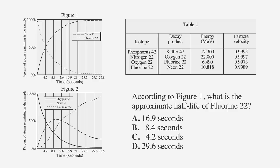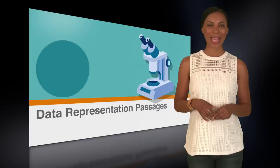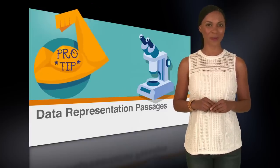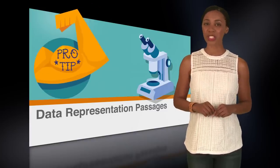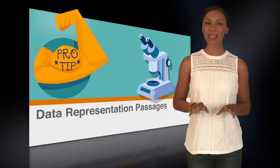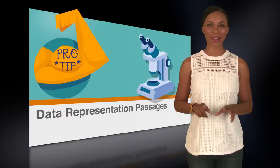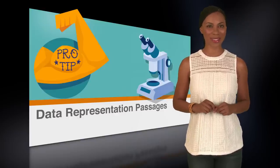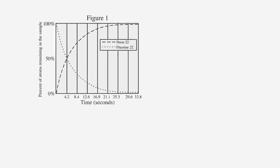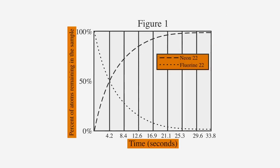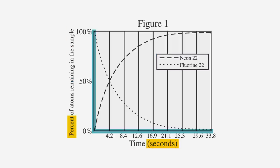For example, when the question directs you to Figure 1, don't go to Figure 2 or Table 1. Here's a pro tip: when you read that the question says Figure 1, immediately place your pencil on that header so you know exactly where to look. You should also pay attention to the legend and headings, as well as the axes of graphs, which may not always be what you expect, and units of measure, which are often presented in the questions.